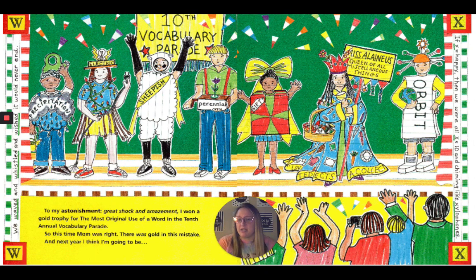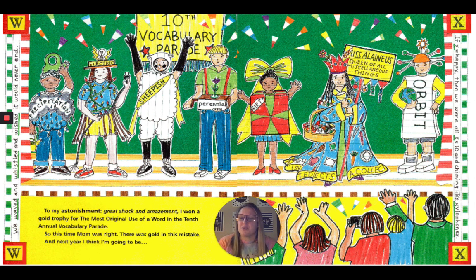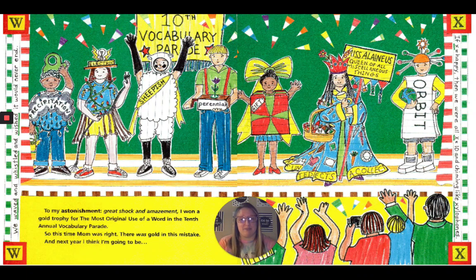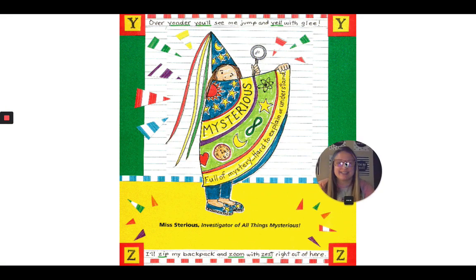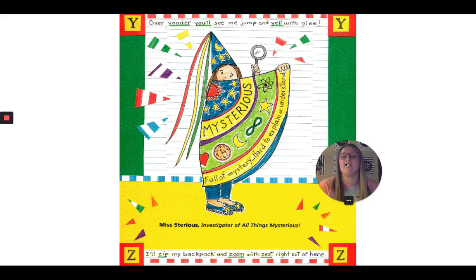To my astonishment — great shock and amazement — I won a gold trophy for the most original use of a word in the 10th annual vocabulary parade. So this time my mom was right. There was gold in this mistake. And next year, I think I'm going to be... Miss Stereous — investigator of all things mysterious.